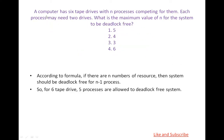Now there is another question: A computer has six tape drives with N processes competing for them, and each process may need two drives. What is the maximum value of N for the system to be deadlock-free? We know that if there are N resources, then the system should be deadlock-free with at most N minus one processes. Since there are six tape drives, we need at most five processes to keep the system deadlock-free.